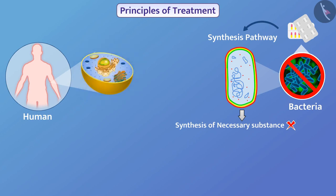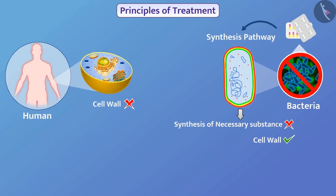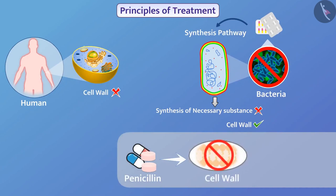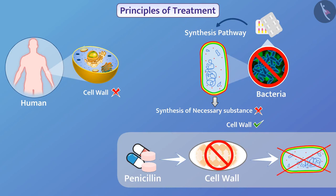For example, in the cells of humans there is no cell wall, so the process to synthesize the cell wall does not take place in humans. But bacteria have a cell wall, so the process to synthesize the cell wall takes place in bacteria. The medicine penicillin inhibits the process of cell wall synthesis. Due to this, bacteria are unable to synthesize the cell wall, their cell wall becomes thin, and they are killed easily. Essential processes that occur in bacteria do not occur in humans, so medicines have no effect on humans — because this medicine only prevents the essential process of bacteria, its effect is only on bacteria and not on other microorganisms.